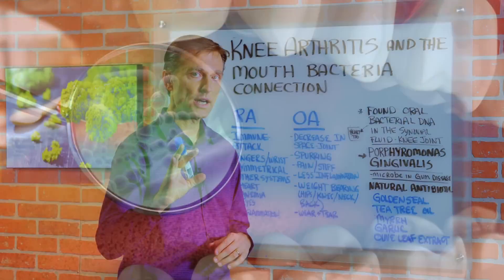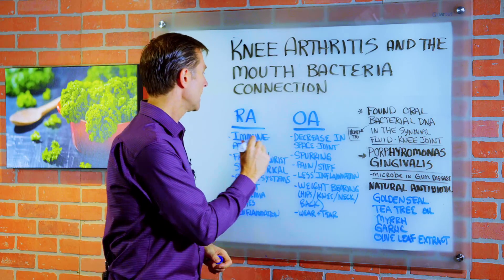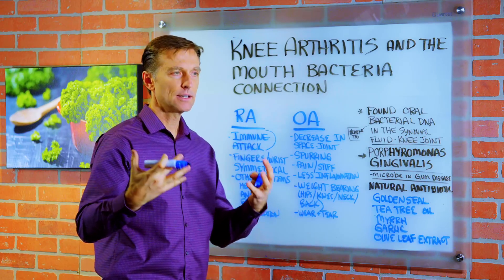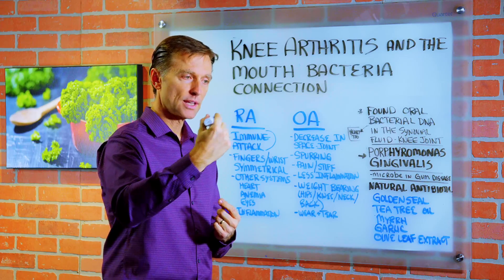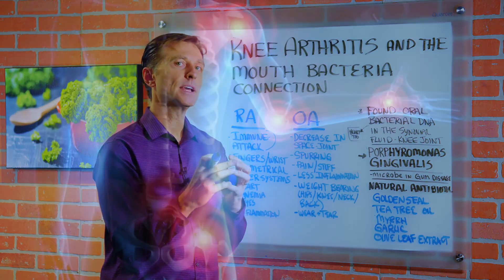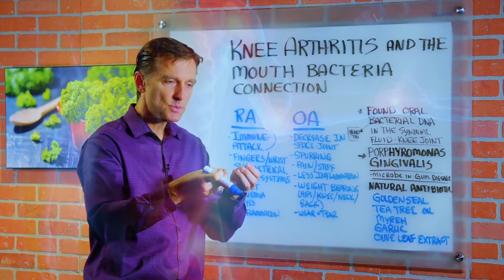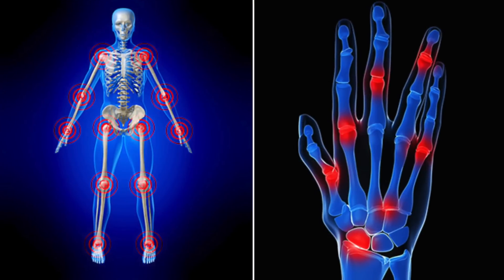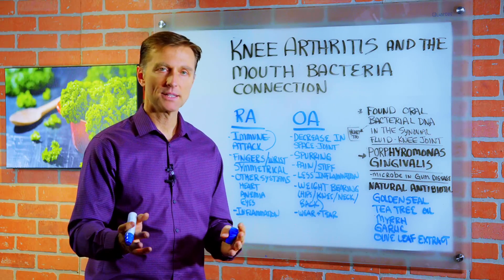First, let me touch on the difference between rheumatoid arthritis and osteoarthritis. In rheumatoid arthritis, you have an immune system attack on your own joints. You have antibodies — anti means against the body — little things that are attacking the joint, keeping it in an inflamed state and creating breakdown. You get this enlargement of the joint. It happens in the fingers, the wrists, the knees, and other joints, but it's always symmetrical — on both sides at the same time.